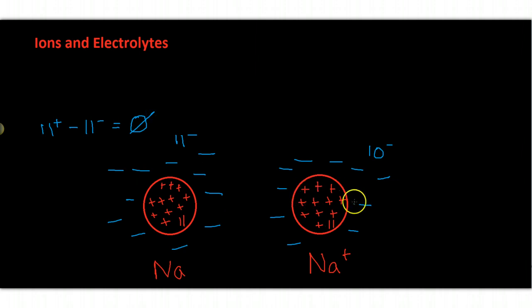Now over here with the sodium ion, there are 11 protons inside the nucleus, but in this case we are missing an electron.